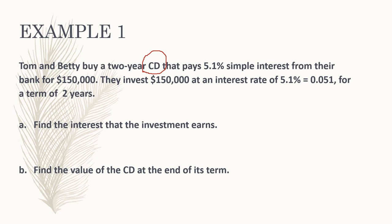Tom and Betty have a two-year CD and their interest rate is 5.1%. Converting that percentage to decimal form: 5.1% is 0.051. Remember, to convert a percentage to a decimal, you move the decimal point two places to the left. The question asks us to find the interest earned. Using I equals P times R times T: P is $150,000, R is 0.051, and T is 2 years.